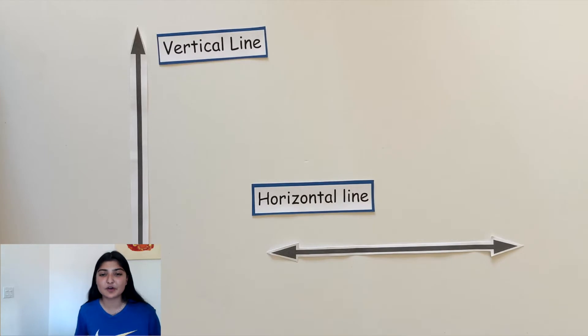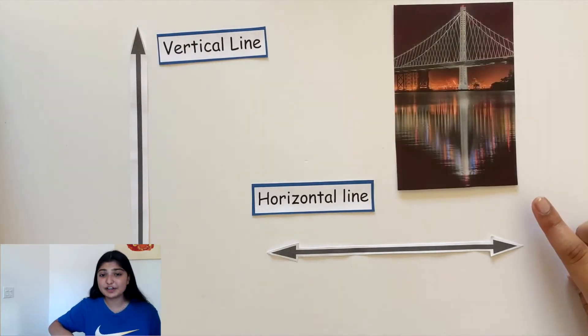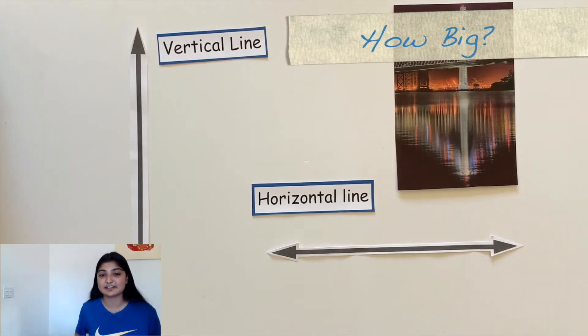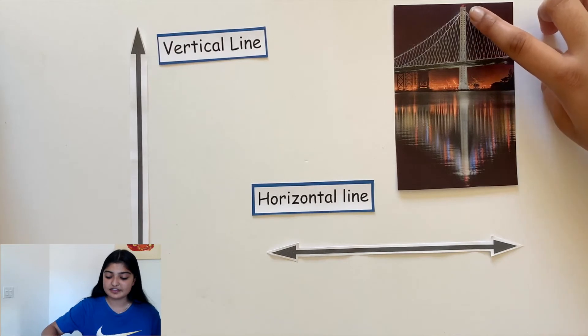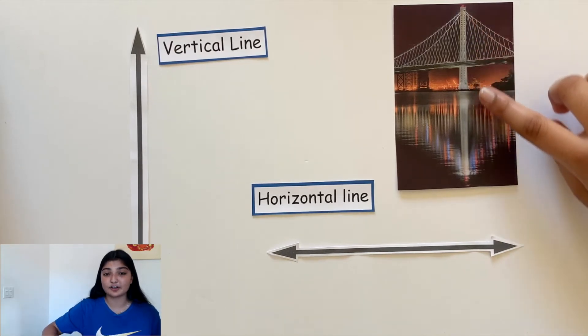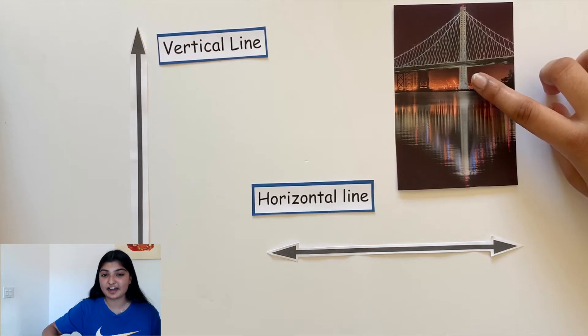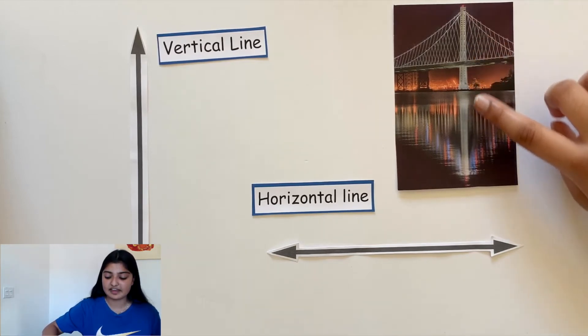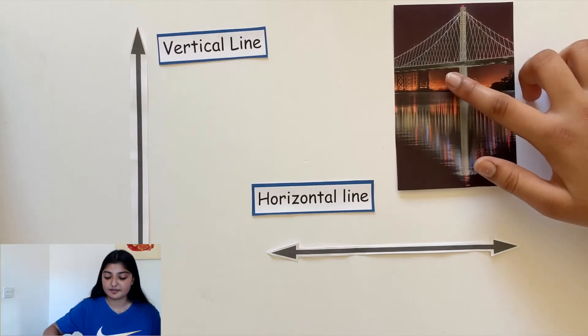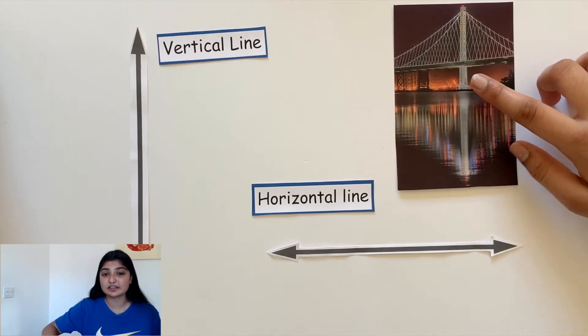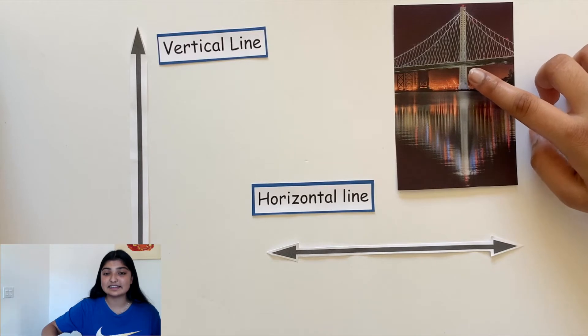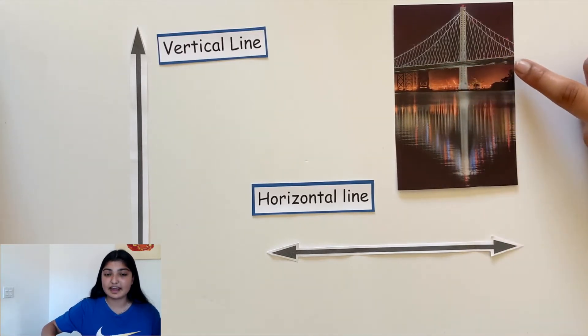Now, where can we see examples of vertical and horizontal lines? Do you know what this is? This is a really big bridge near San Francisco. This central column is a vertical line since it's straight and continues in the up and down direction. This road is a horizontal line since it continues endlessly left and right. Do you see any other kinds of lines in this picture?